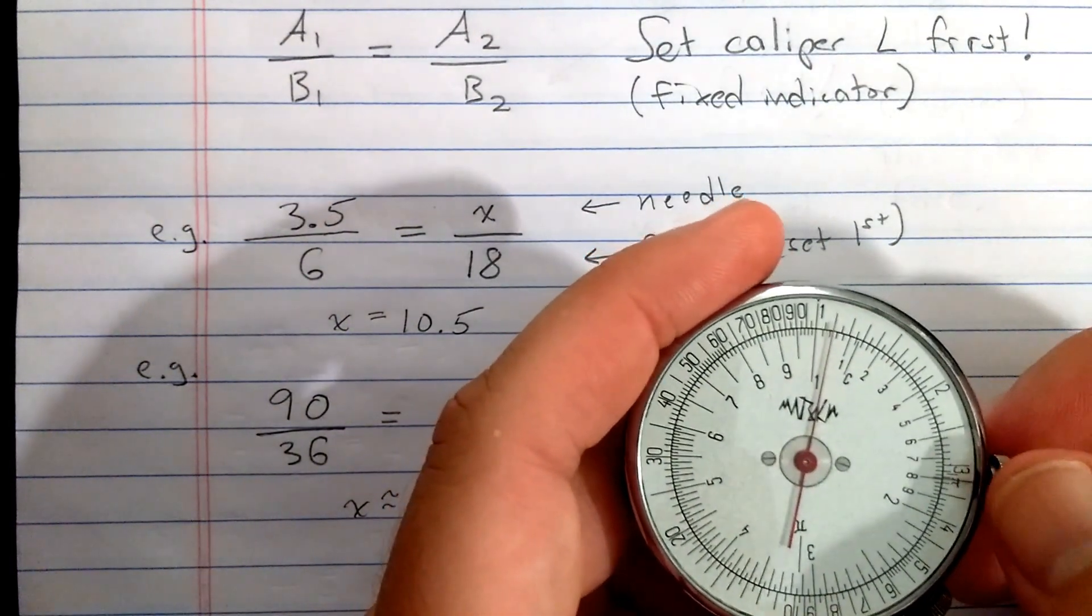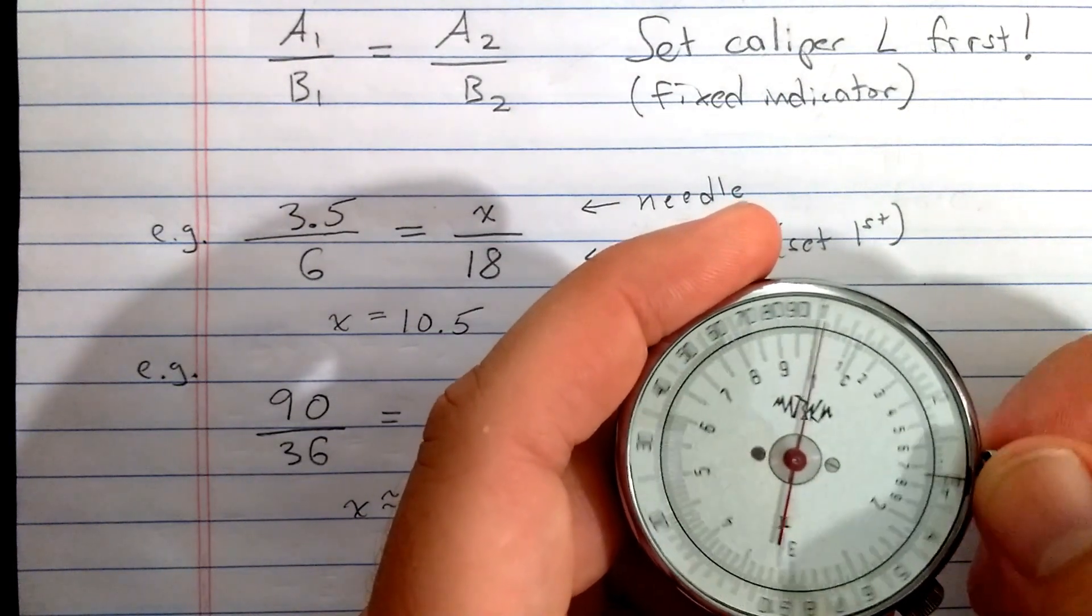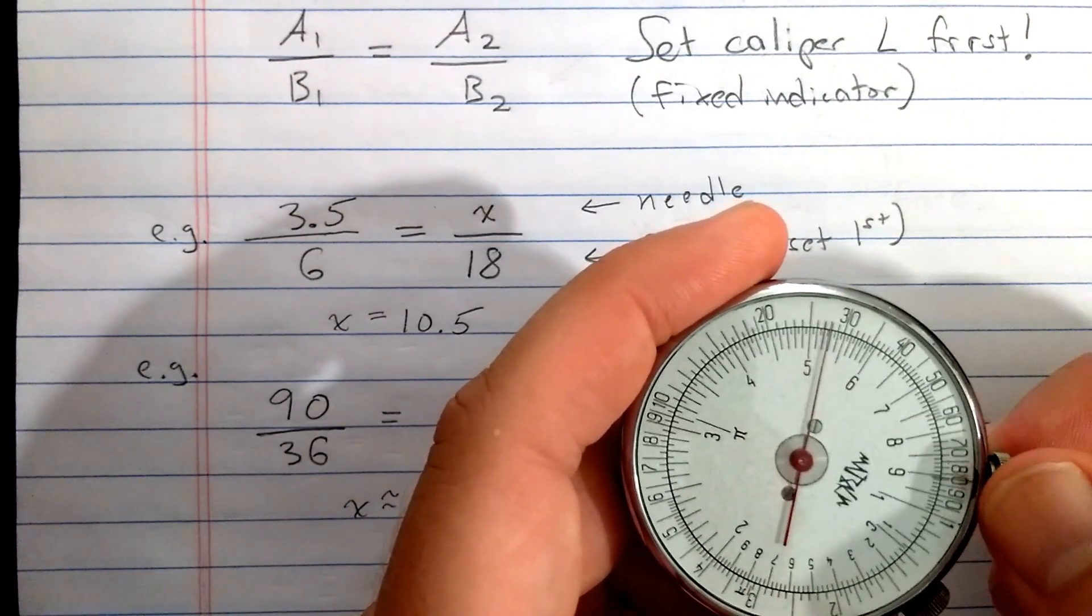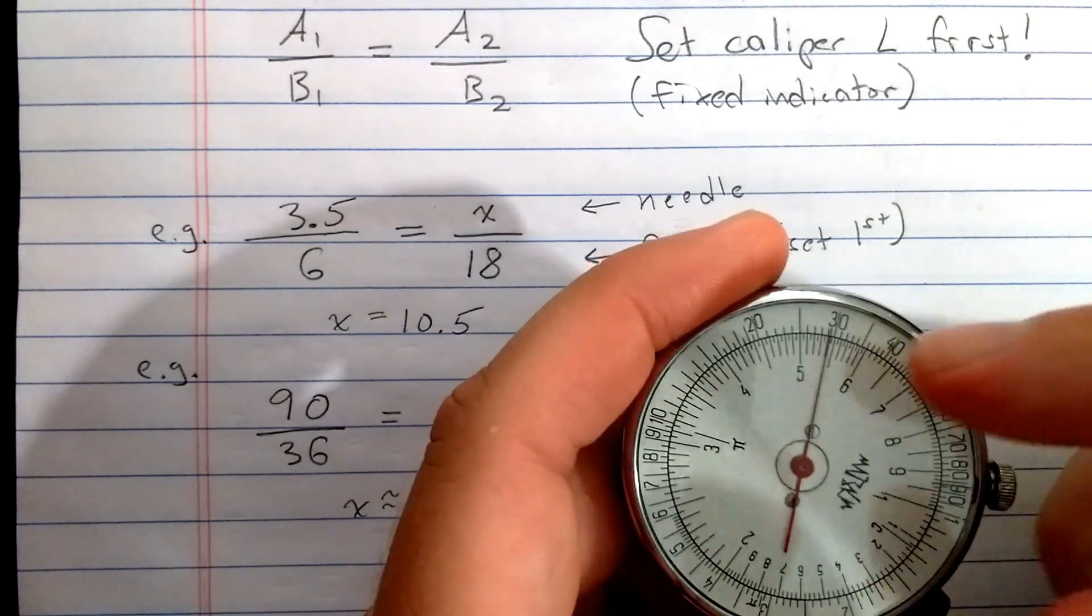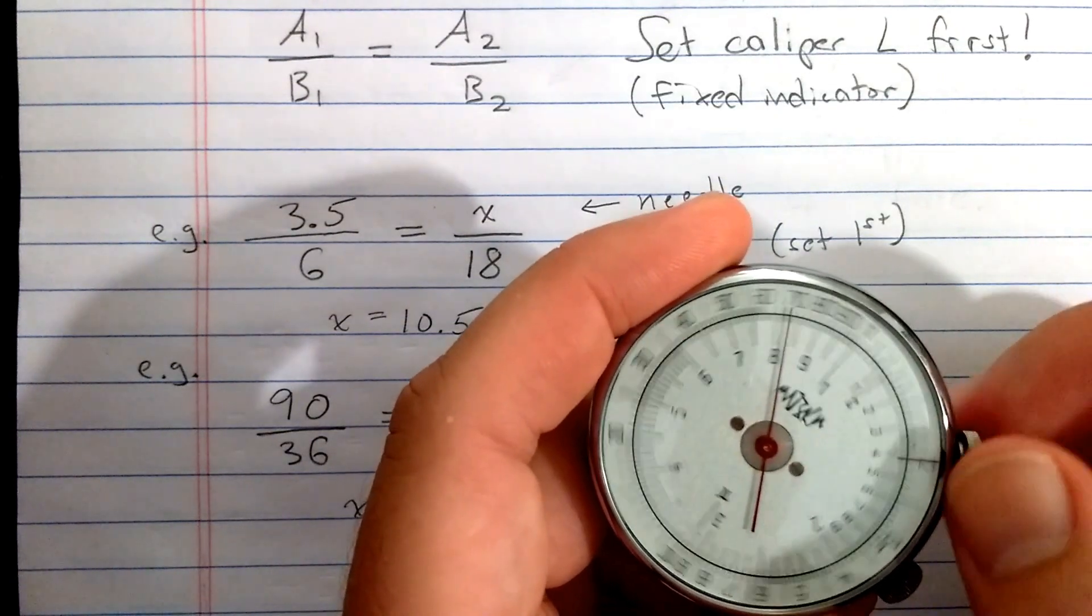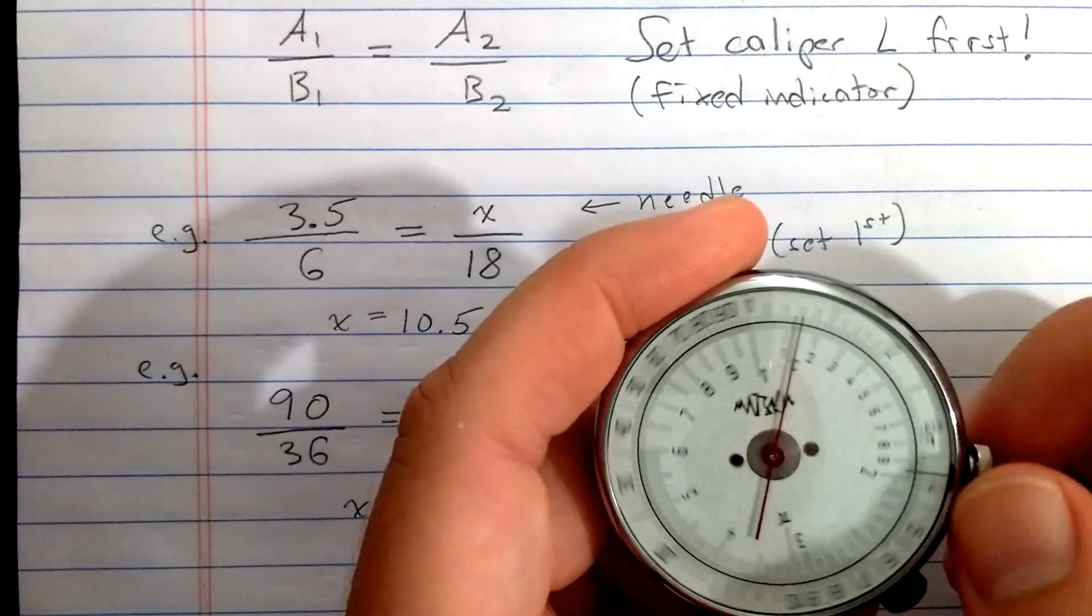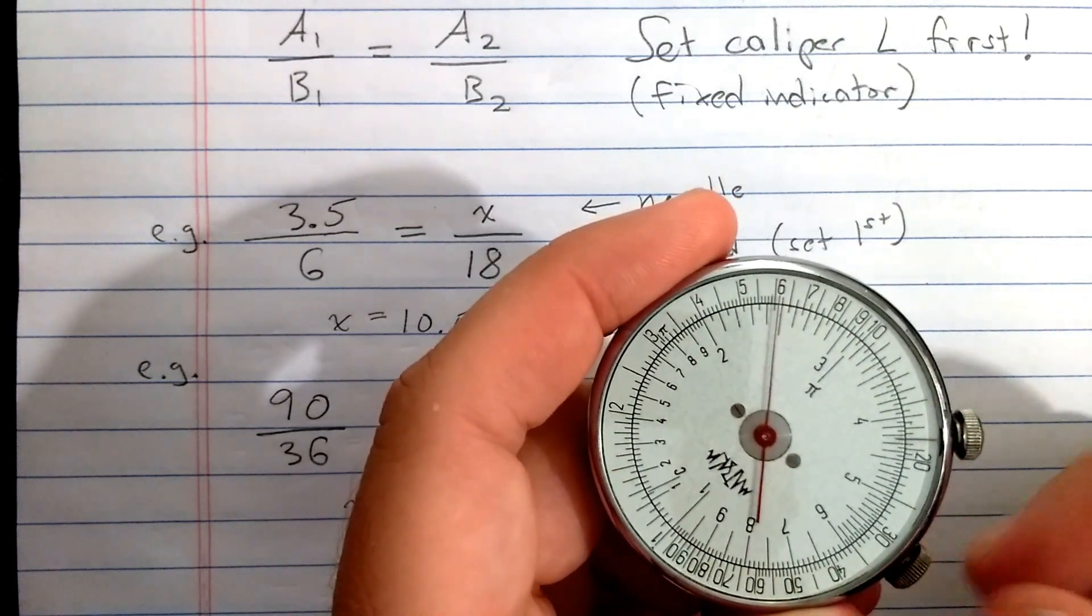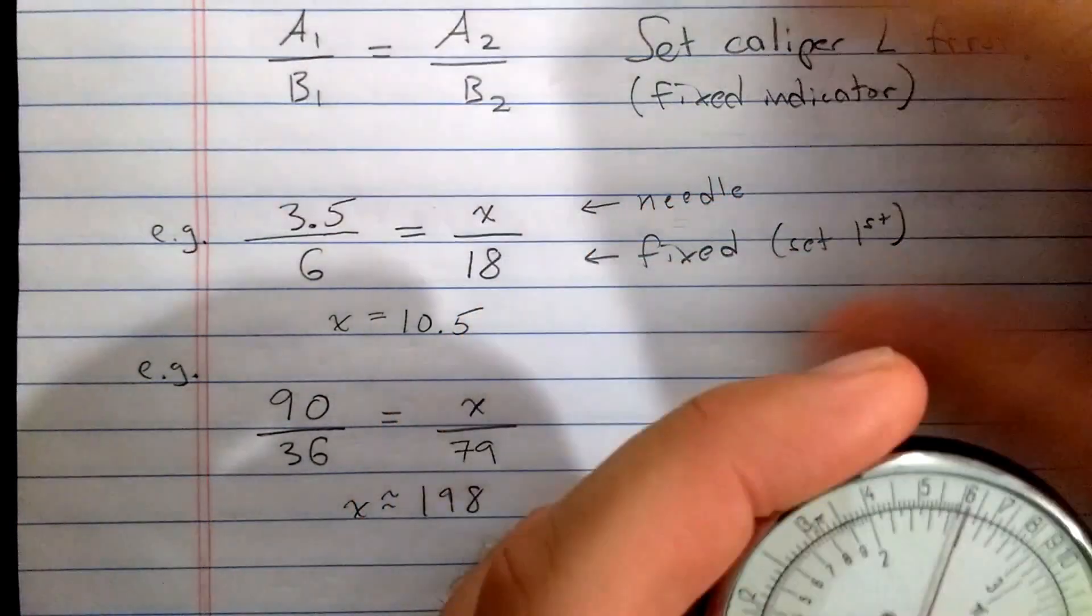Now the nice thing is you want to solve another proportion involving those two things, you just rotate it again. If you want to set the numerator, you set it at the needle. You want to set the denominator, you set it at the indicator. Of course, you do this by rotating the face, which is moving the caliper and not by changing the needle, which is essentially sizing the caliper.